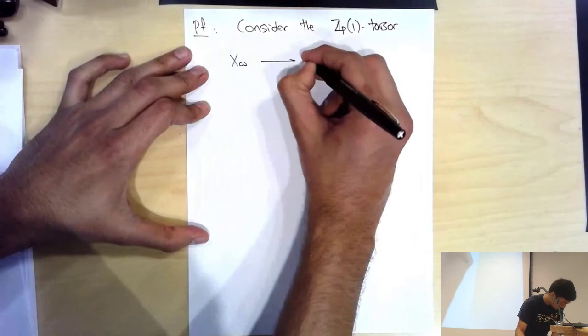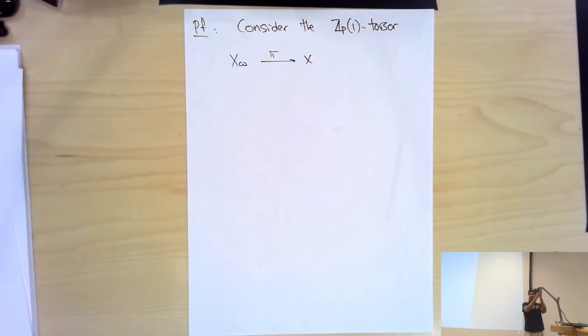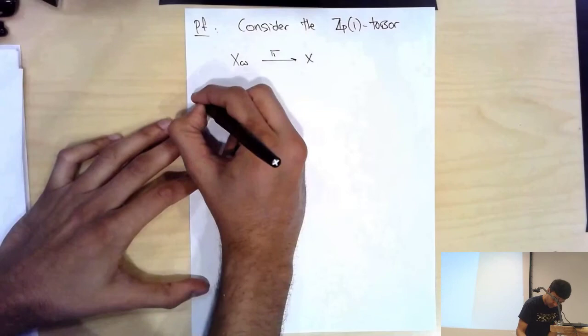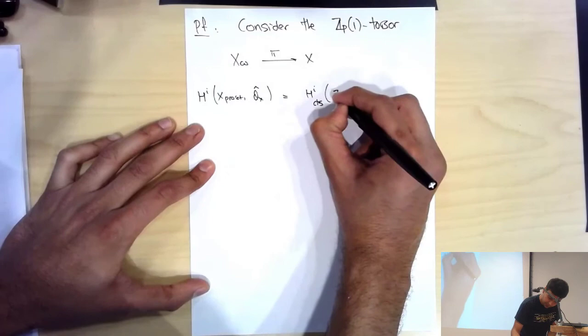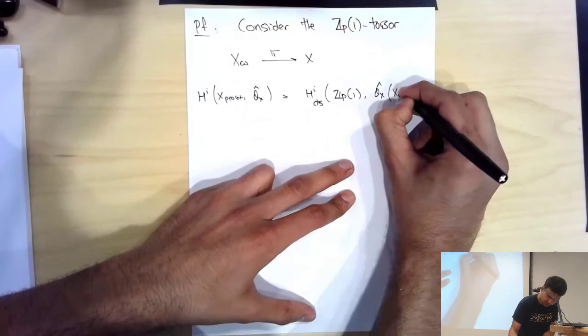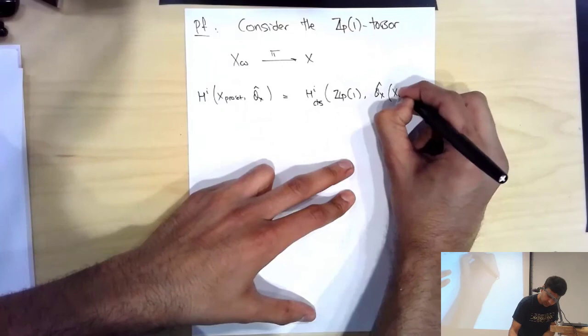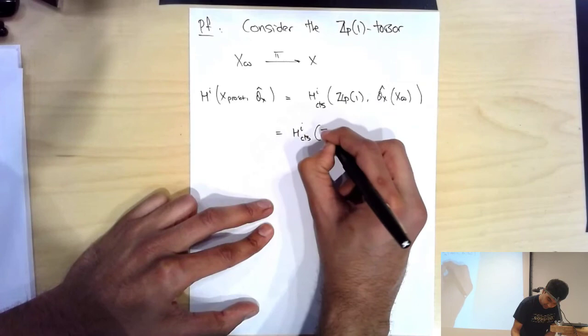Let's prove this statement using the objects introduced earlier. We have the Z_p(1)-torsor π: X_∞ → X. Since X_∞ is affinoid perfectoid and this is a torsor for a group, we can compute the cohomology downstairs by taking the group cohomology of the ring upstairs. So H^i(X_{pro-ét}, Ô_X) = H^i_{cts}(Z_p(1), Ô_X(X_∞)) = H^i_{cts}(Z_p(1), C⟨t^{±1/p^∞}⟩). I gave an eigenspace decomposition of this ring, indexed by powers of t with exponents in Z[1/p], so the direct sum pulls out.